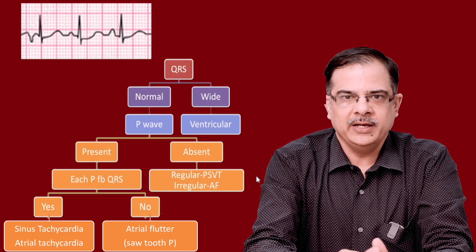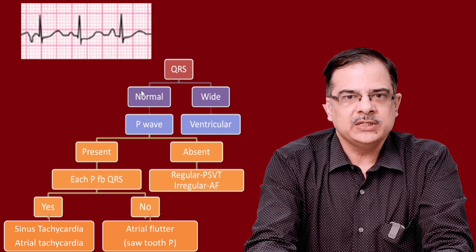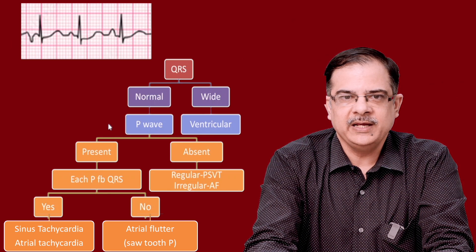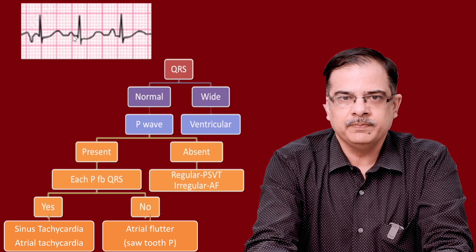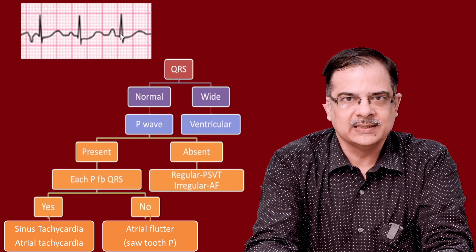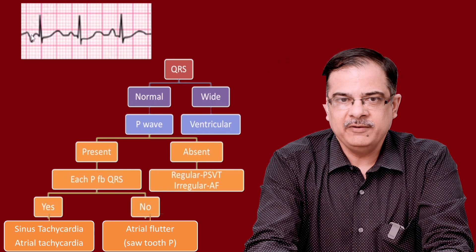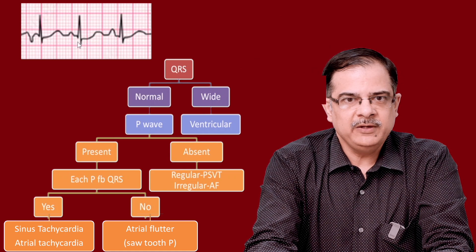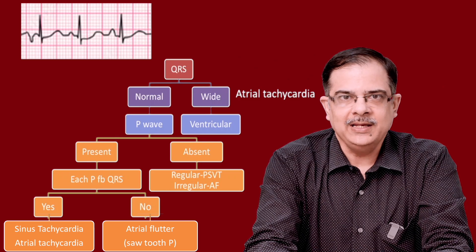Applying the same flowchart to the next ECG: QRS complex is normal. P wave is present before the QRS — clearly visible. Each P is followed by QRS — yes. However, assessing the P wave morphology: one P wave is negative, then a positive P wave, then a slightly tall P wave. These P waves are changing their morphologies throughout the ECG. Therefore this is most likely atrial tachycardia.